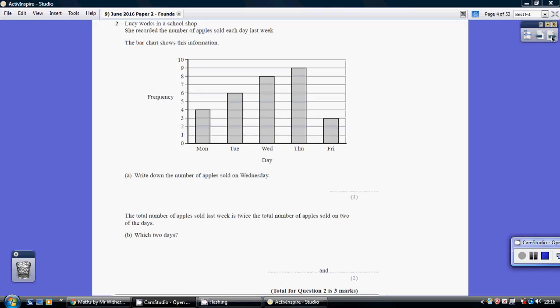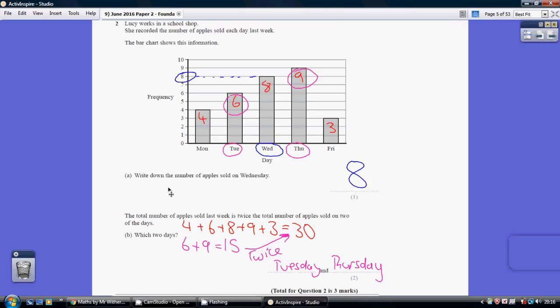Question two. The number of apples sold on Wednesday is this column, and you can see that bar goes up to number eight.